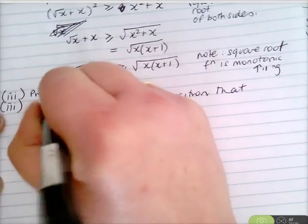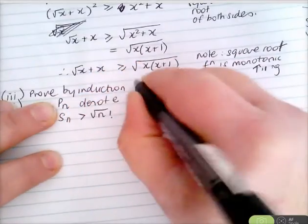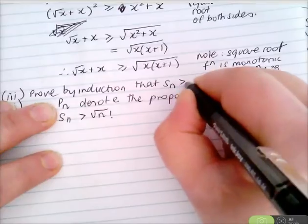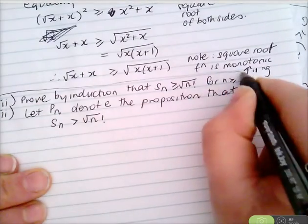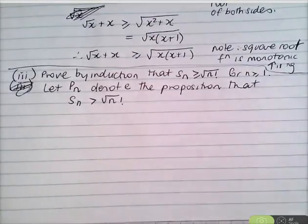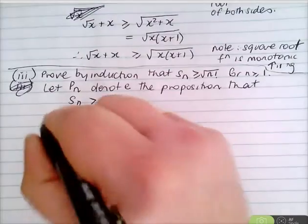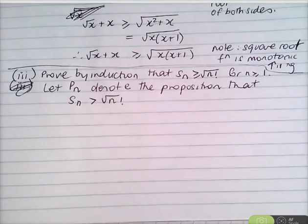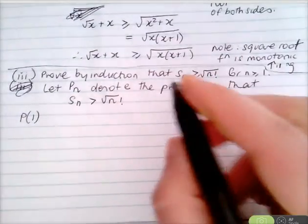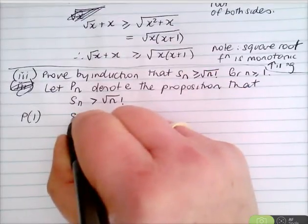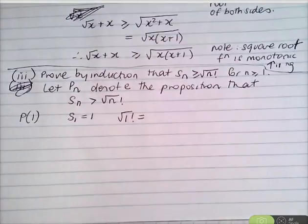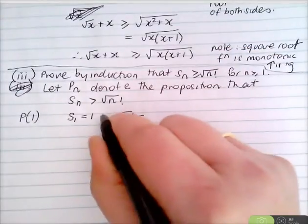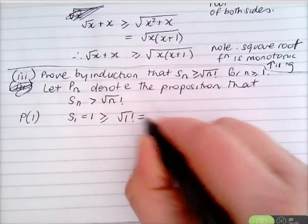For part 3, prove by induction that S_n ≥ √(n!) for integers n ≥ 1. Step 1: for P₁, S₁ = 1 ≥ √(1!) = 1, true. For P₂, S₂ = 2 ≥ √(2!) = √2 ≈ 1.4, also true. So proven for n = 1 and n = 2.